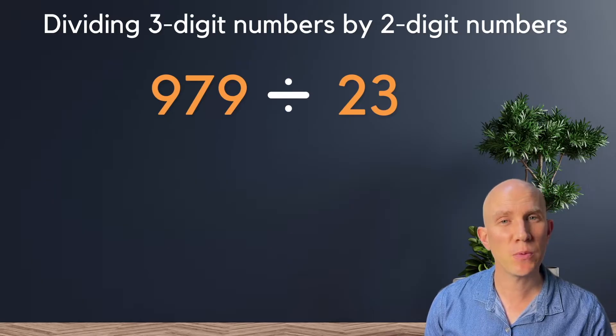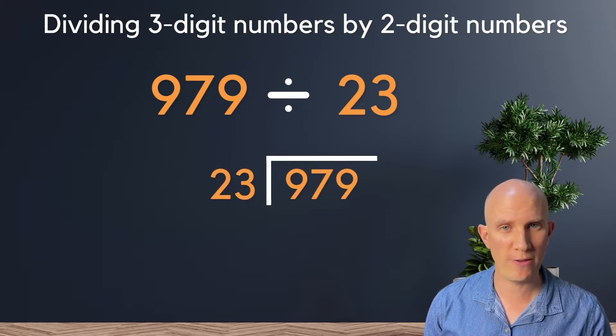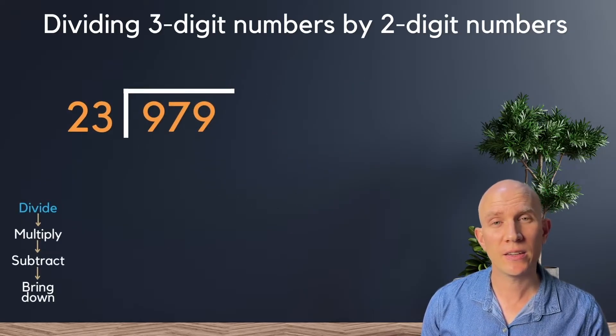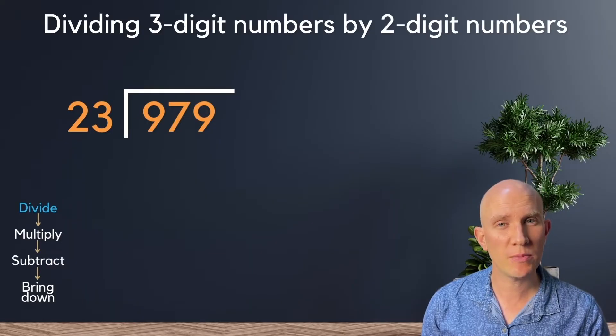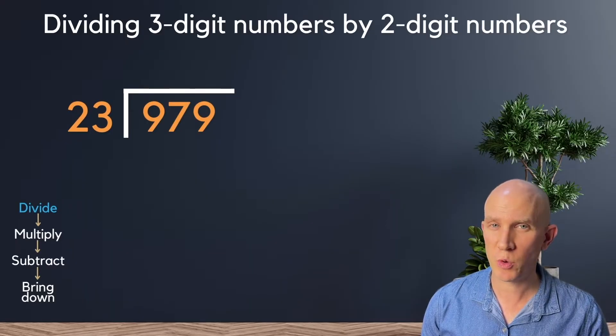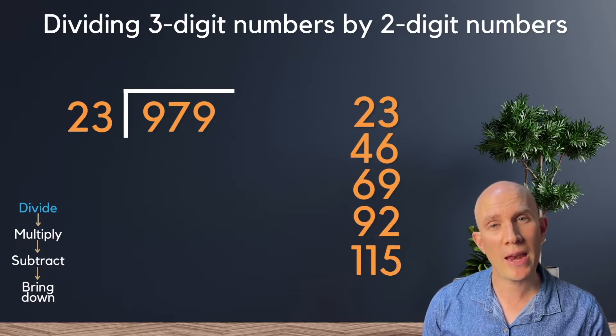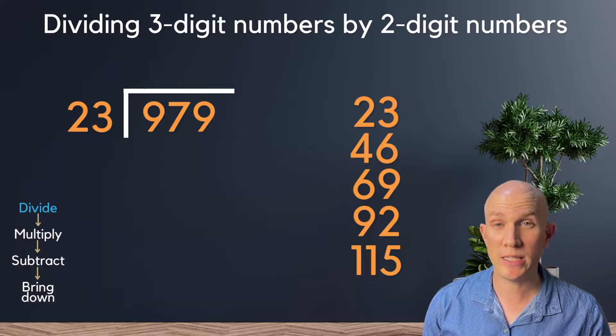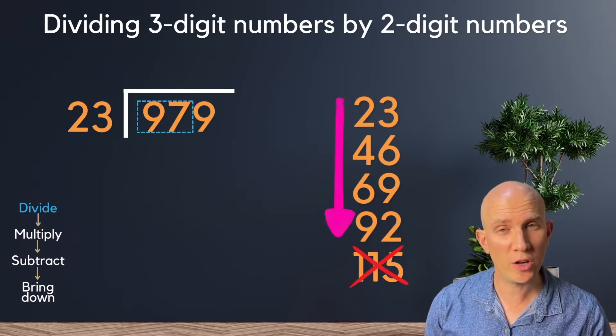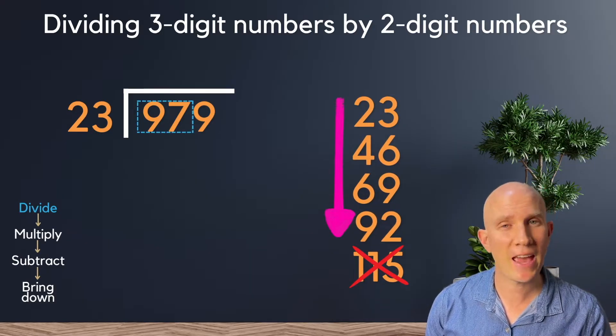Let's try a slightly trickier one. You're going to set up your sum ready for long division. Next, you're going to write out the 23 times table ready to help and support you. And then we can start with step one, where we say, can nine be divided by 23? No, it can't. But 97 can be.